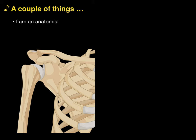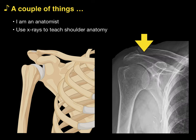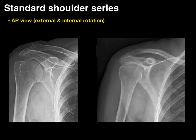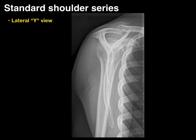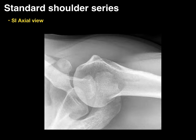A couple of things first: I'm an anatomist, not a radiologist. So when I teach shoulder anatomy, I usually use pictures like this. But today I'm going to use x-rays to teach shoulder anatomy — not so much to teach you how to be a radiologist. I am going to use the standard shoulder series: an AP view with external and internal rotation of the humerus, a lateral Y view, and an SI superior inferior axial view.